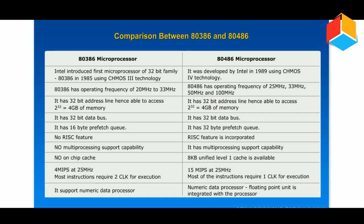The 80386 has an operating frequency of 20MHz to 33MHz. The 80486 has operating frequencies of 25MHz, 33MHz, 50MHz, and 100MHz.